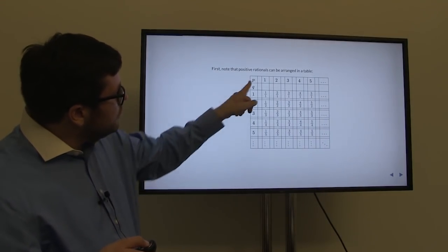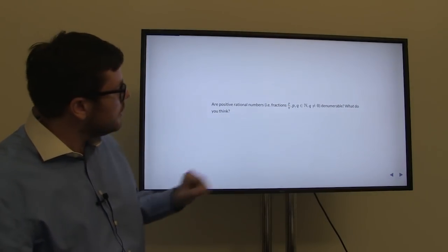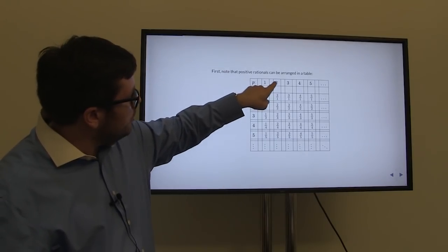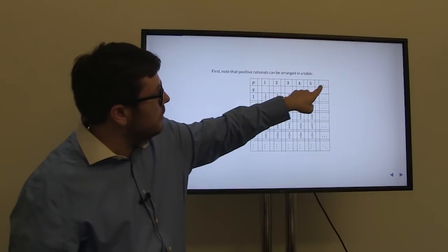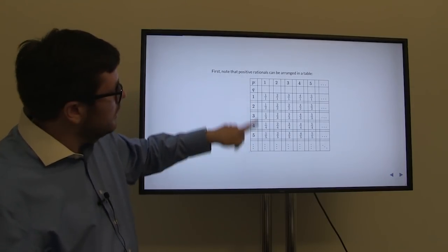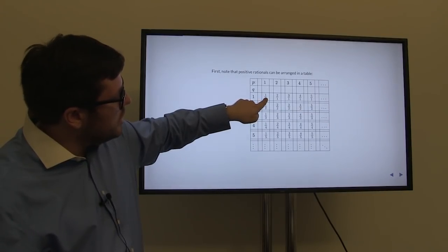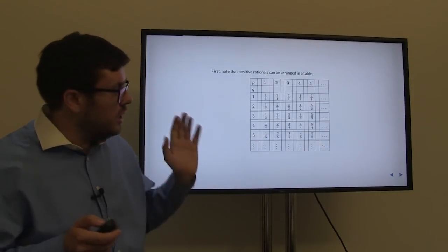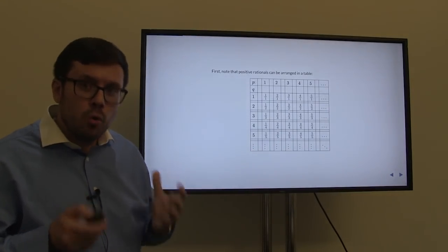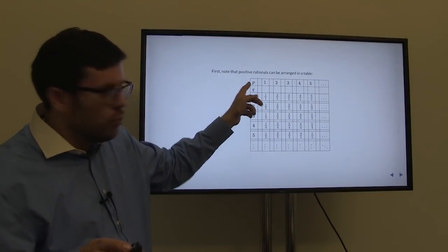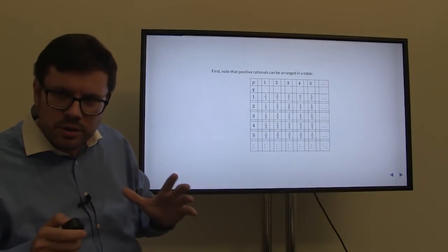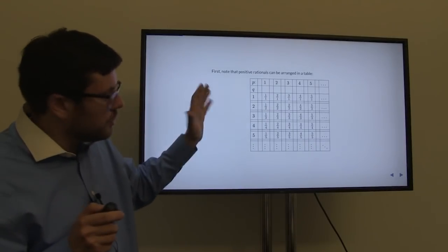Let us come up with the following table. We have our numerator p and denominator q. We create a table with all possible numerators 1, 2, 3, 4, 5, and so on, and all possible denominators 1, 2, 3, 4, 5, and so on. The fractions we obtain form a two-dimensional table. If we could continue this table indefinitely, it would contain all rational numbers of the form p over q — the positive ones. So we have a two-dimensional table: 1/1, 2/1, 3/1, ..., 1/2, 2/2, 3/2, and so on.